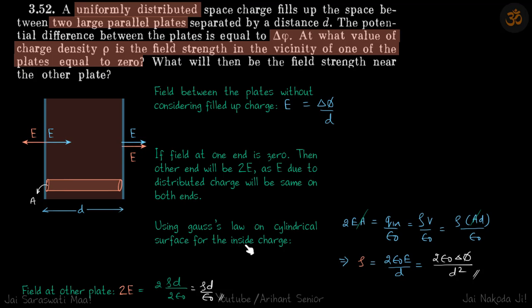Using Gauss law on the cylindrical surface for the inside charge, we will say that electric field is coming out on both surfaces. So flux will be 2E times A is equal to Q in by epsilon, and Q in will be rho into volume.